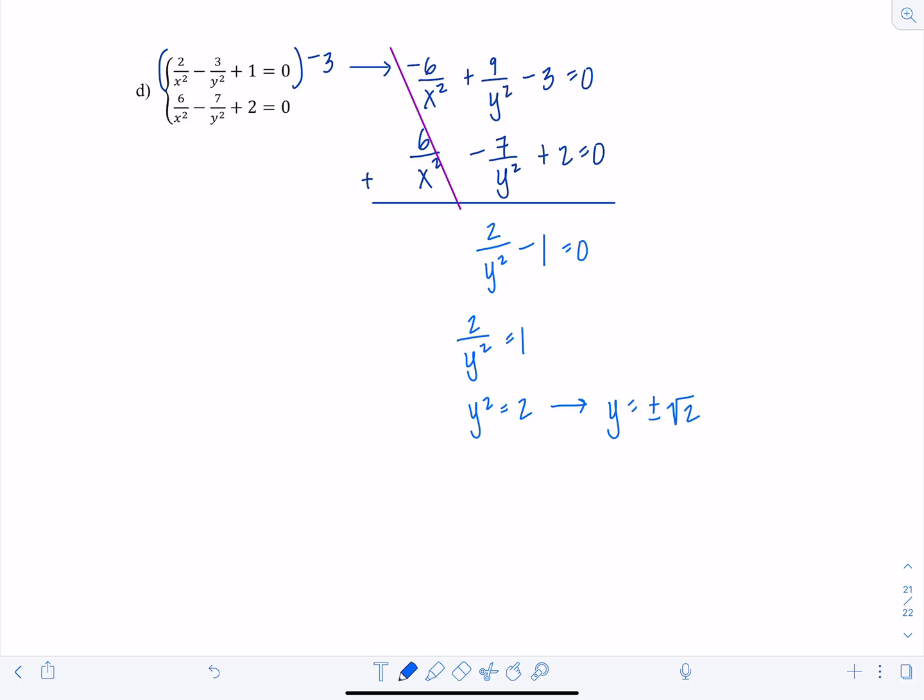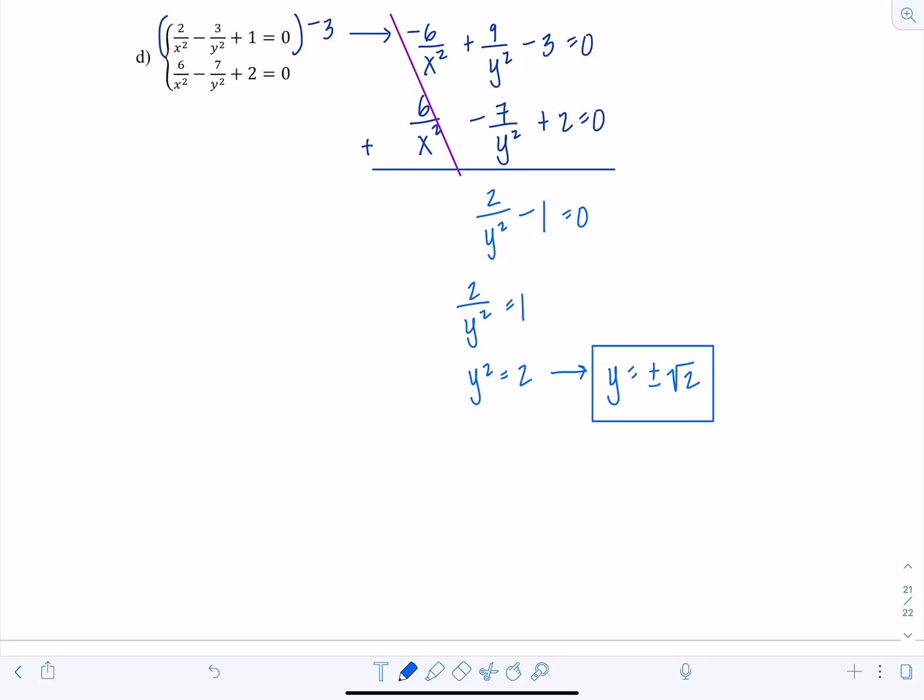Now I just need to figure out what x is going to be. So you can use either equation. Let's just stick with the first one. So I know 2 over x squared minus 3 over, now y squared, regardless if it's plus or minus root 2, it's going to be 2 plus 1 is 0. So negative 3 halves plus 1, that's negative 1 half. And then if I add it over to the other side, I'm going to get 2 over x squared equals a positive 1 half. And then cross multiplying, I get x squared equals 4. So x equals plus or minus 2. And I get this solution if y was either positive root 2 or negative root 2.